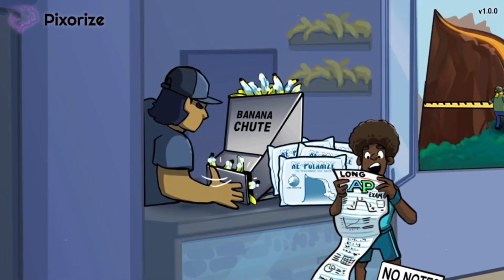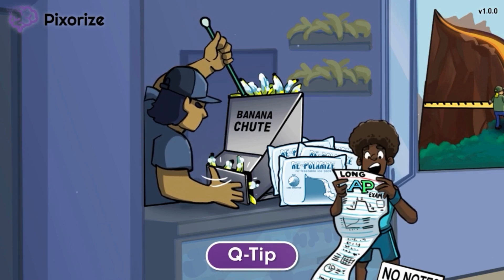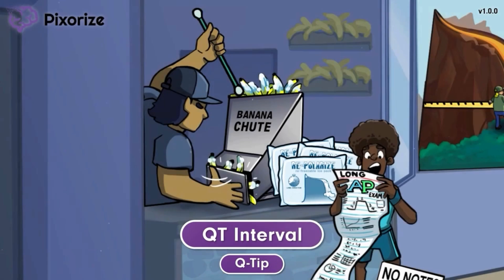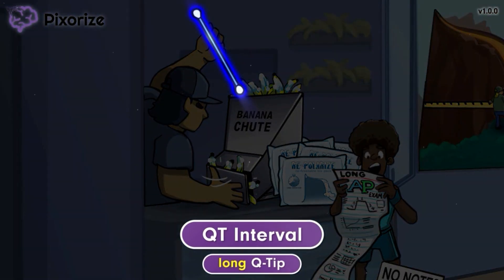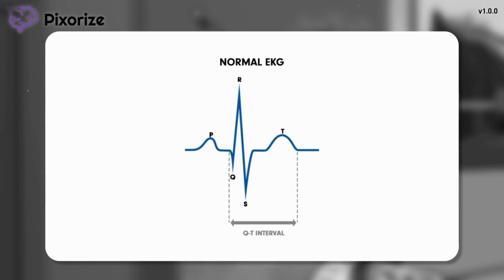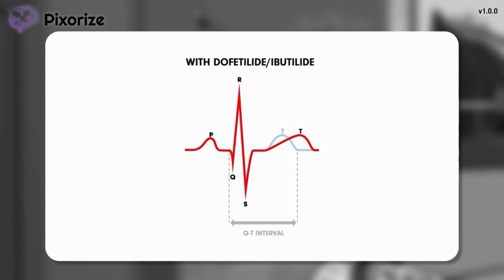It turns out the banana chute is clogged by a clump of frozen bananas. The worker pulls out a long Q-tip and snakes it down the chute to break apart the clump. The Q-tip is our recurring symbol for the QT interval, so this long Q-tip helps you remember how Dofetilide and Ibutilide can prolong the QT interval. On a normal EKG, the QT interval is the line between the beginning of the QRS complex and the end of the T wave. The T wave is generated by ventricular repolarization, and prolonging repolarization lengthens the T wave to cause a prolonged QT interval.